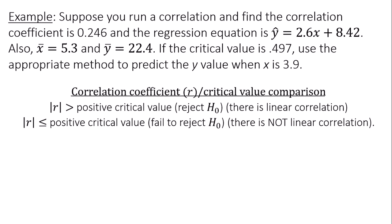Also, x-bar, the average of the x values, is 5.3, and y-bar, the average of the y values, is 22.4. If the critical value is 0.497, use the appropriate method to predict the y value when x is 3.9.